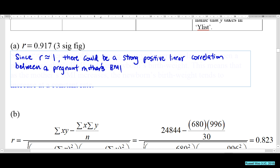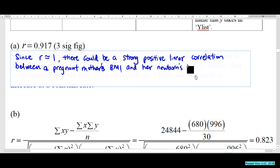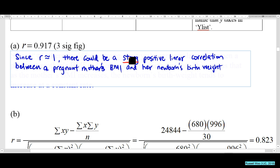This measures the correlation between a pregnant mother's BMI and her newborn's birth weight. Keywords to note: you must say 'strong' because r = 0.917 is close to 1. You must say 'positive' because it's close to 1 and not close to -1.